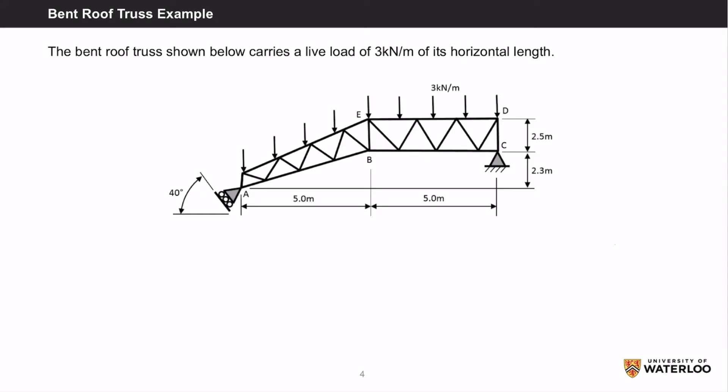Let's start with the bent roof truss example. The bent roof truss shown below carries a live load of 3 kN per meter along its horizontal length. Just to clarify, the horizontal length is the 10 meters which is the full horizontal length of this truss.